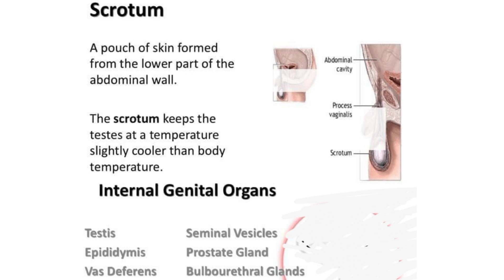The scrotum is the other external male reproductive organ. It is the loose, pouch-like sac of skin that hangs behind the penis. It holds the testicles, also called testes, as well as many nerves and blood vessels. The scrotum protects the testes and provides a sort of climate control system — for normal sperm development, the testes must be at a temperature slightly cooler than body temperature.